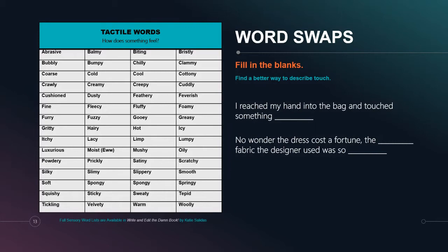'No wonder the dress cost a fortune. The [blank] fabric the designer used was so [blank].' The luxurious fabric? The lacy fabric? What kind of fabric are we talking about? Use that tactile sense. 'The lacy fabric the designer used was so...' — would it be fluffy? Itchy? Limp, stiff, scratchy? What does lace feel like at your fingertips? These are the choices you make to really guide the reader through your word choice.